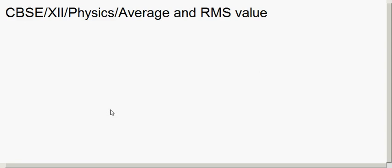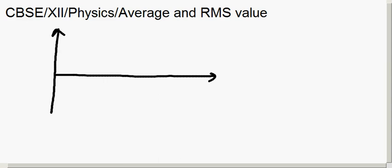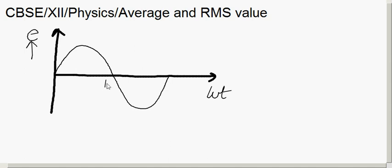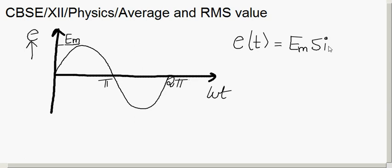Good morning. In today's session we will see what is average and RMS value of an alternating quantity. In the previous session we have seen how to draw or represent an alternating quantity using a graph. The alternating quantity is generally taken along the y-axis — let's say the alternating quantity is the voltage. It is sinusoidally varying, with peak value E-m, and we write it mathematically as E(t) = Em sine(ωt).